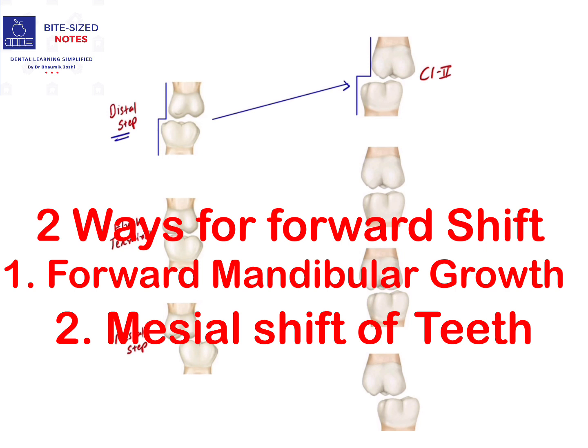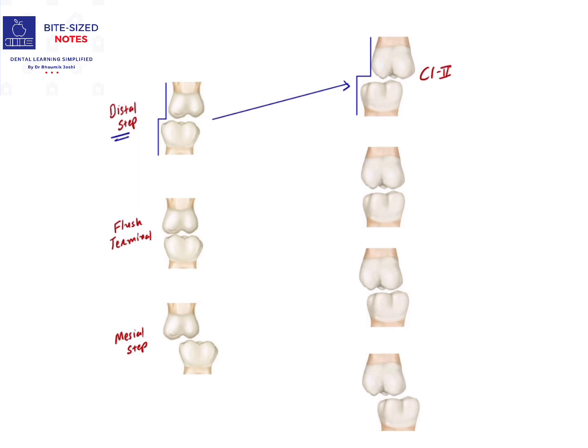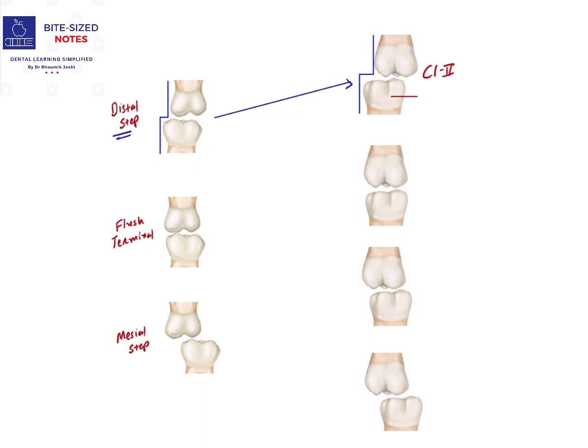And second is with the help of leeway space. The teeth can shift anteriorly, so with the help of both these conditions, when the mandibular molar shifts anteriorly, it can lead to end-to-end relationship.